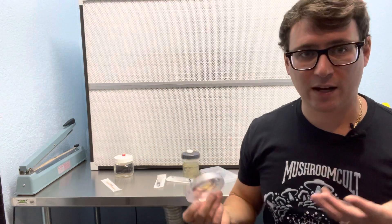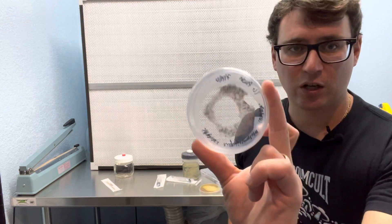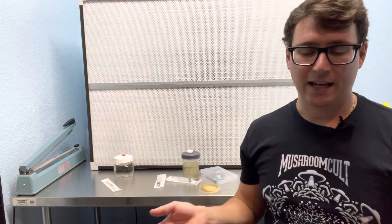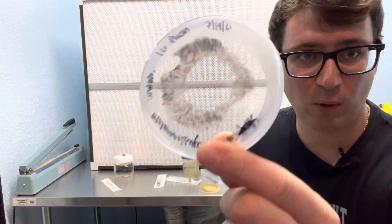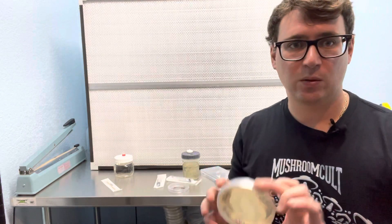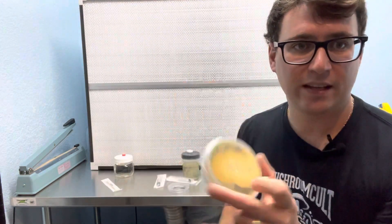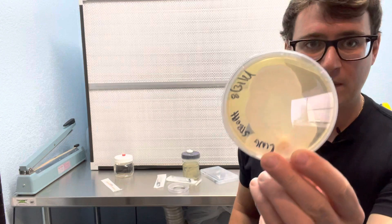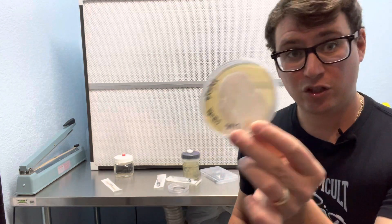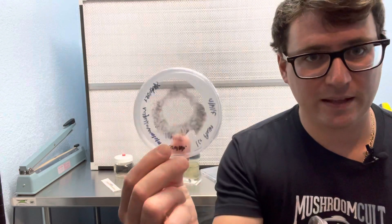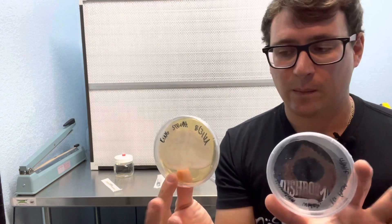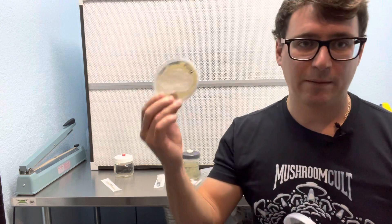The spores are the reproductive cells of the mushroom, and you can think of spores like seeds from a plant. Each one of these spores is going to have a genetic variation of the fungus, as opposed to the mycelium culture which is a monoclonal organism. So this is the same species and the same genotype, where this is going to be the same species and many different genotypes. That's the major difference between spores and mycelium.